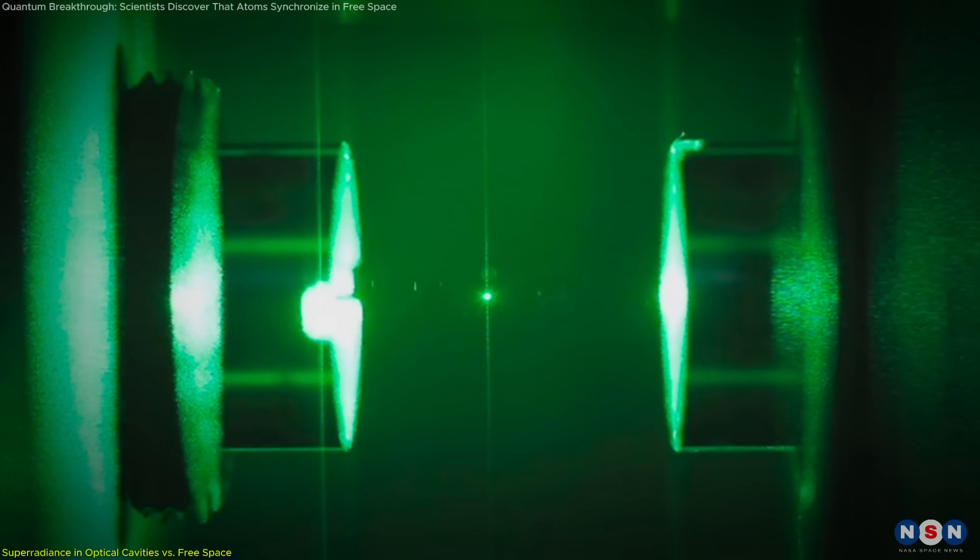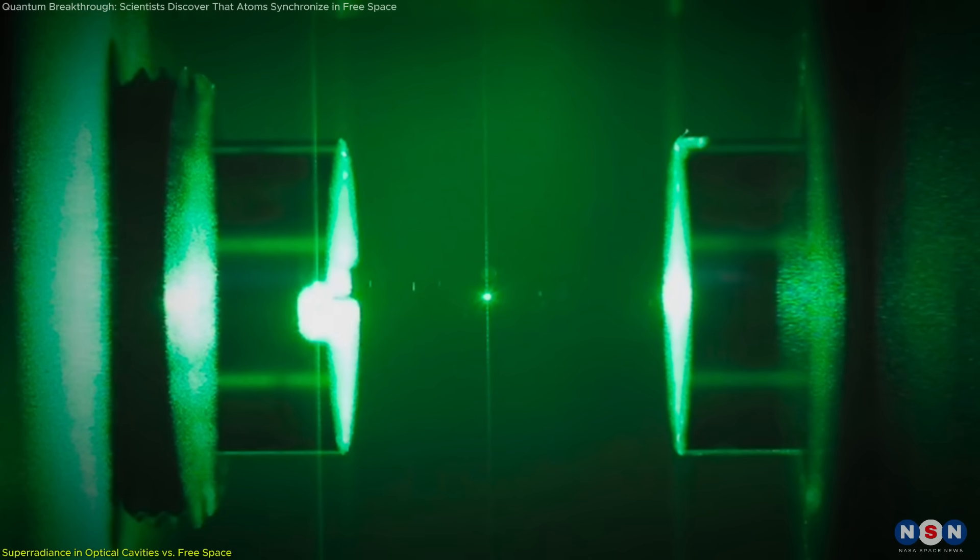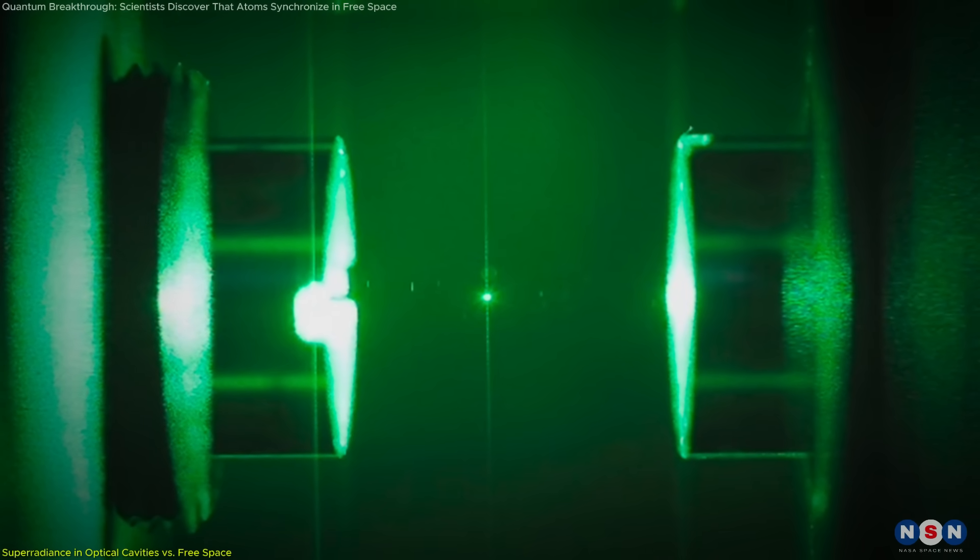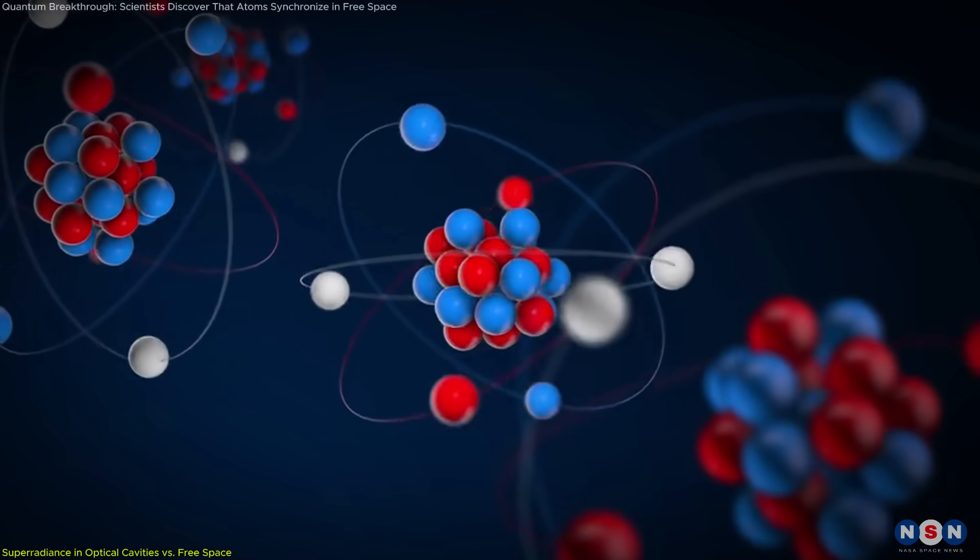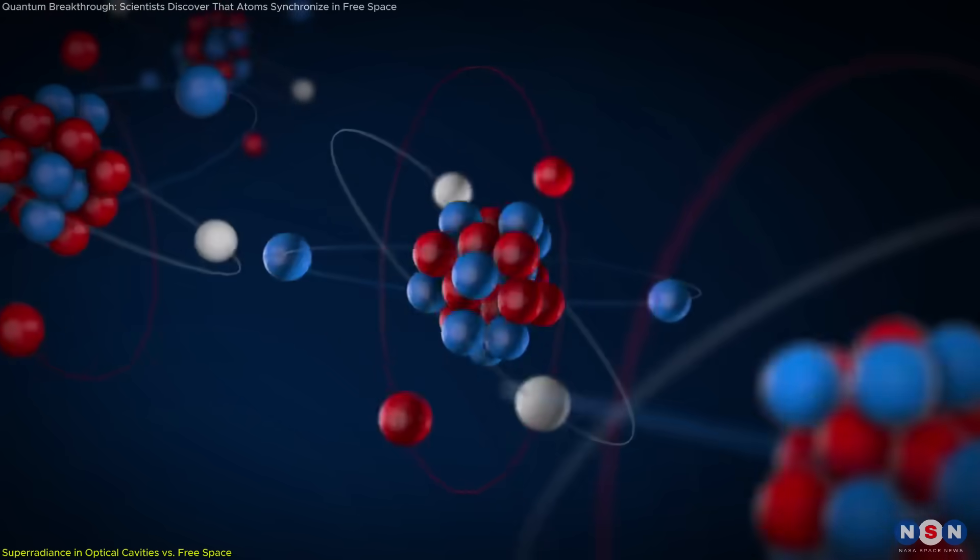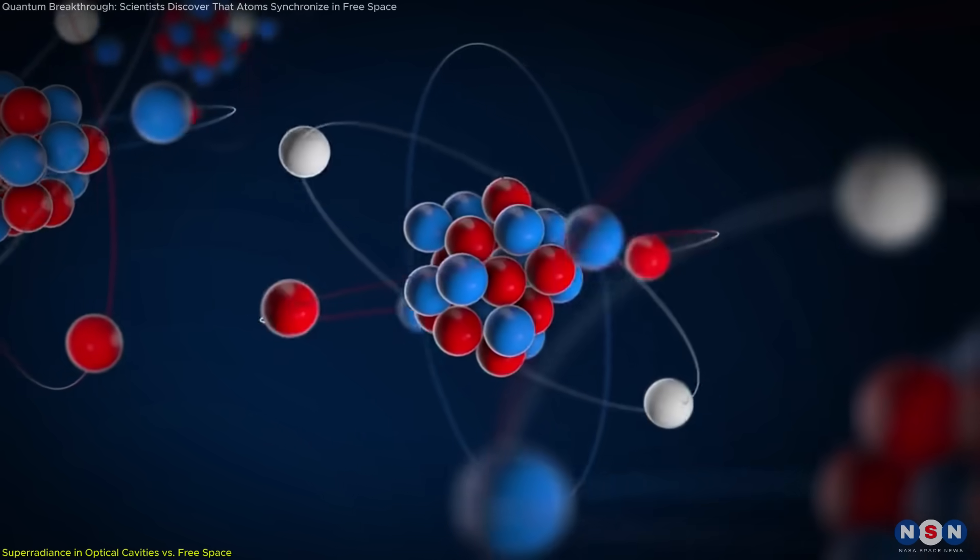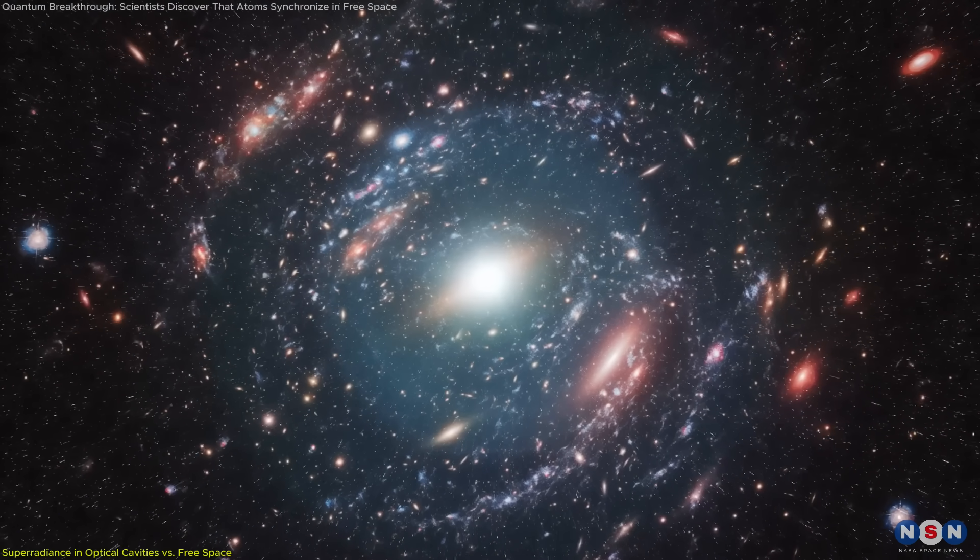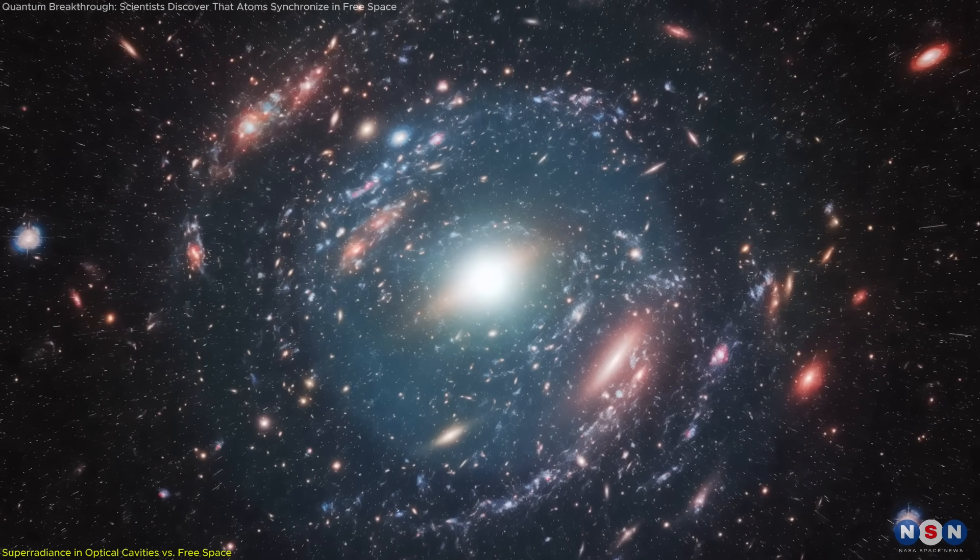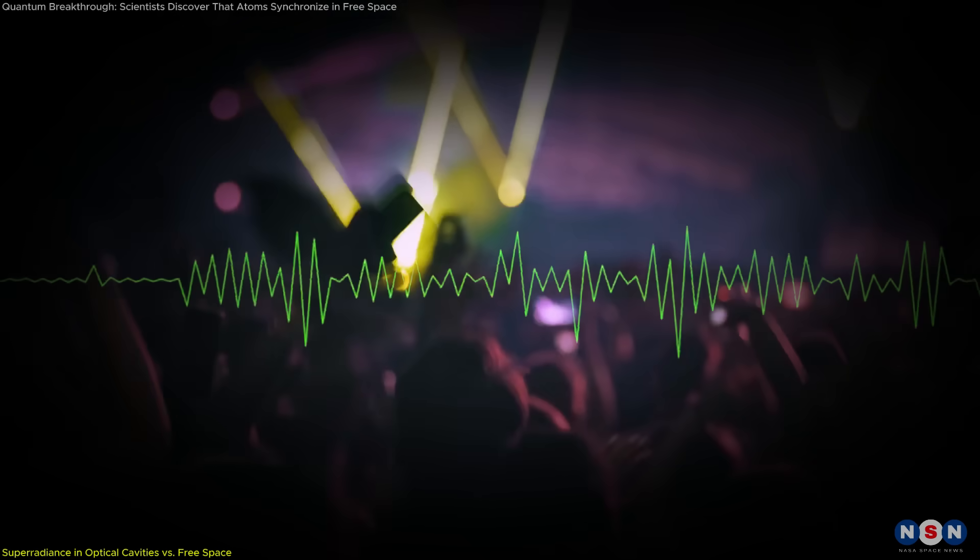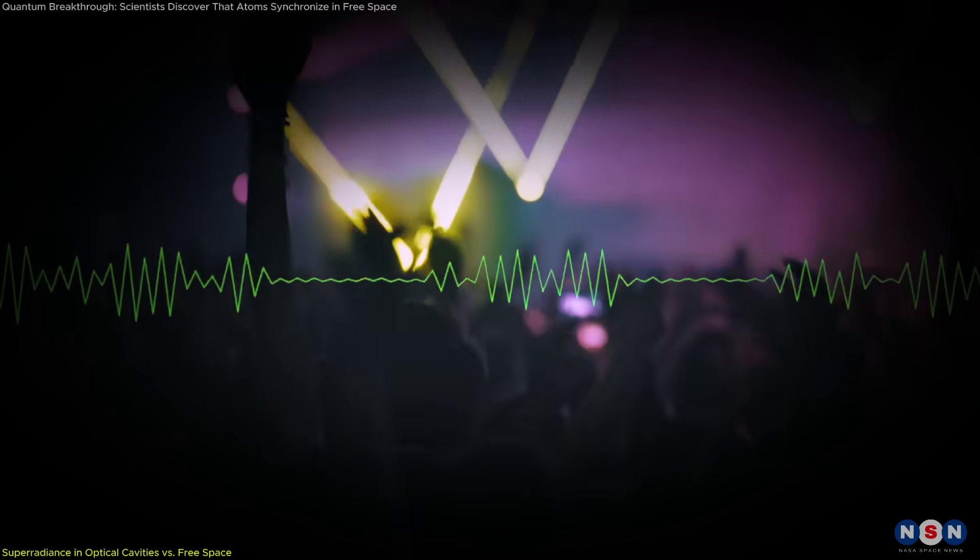In a cavity system, the interaction between atoms and photons is all-to-all, meaning every atom can influence every other atom's emission. This interconnectedness is the key to their synchronized behavior. In free space, however, this interaction is limited and scattered, akin to trying to have a conversation in a noisy, crowded room.